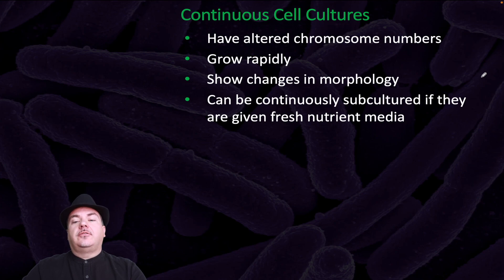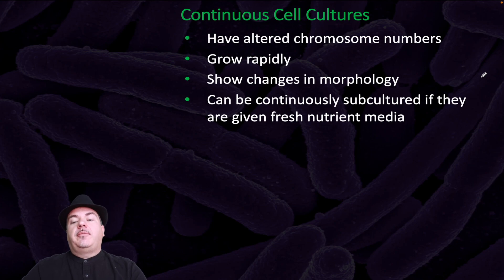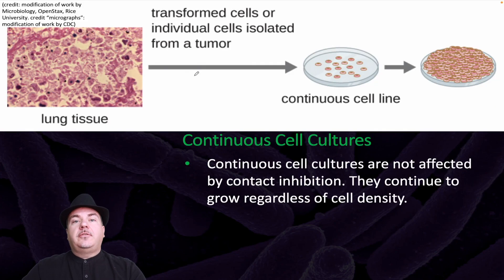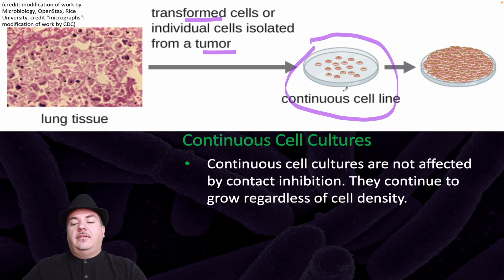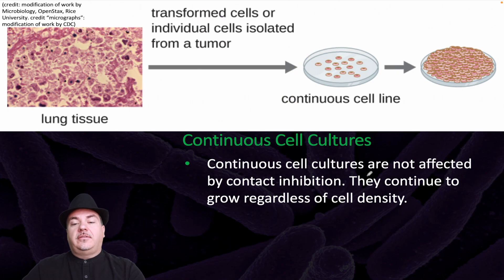Alternatively, we can have continuous cell cultures. Continuous cell cultures can have altered chromosome numbers, they grow rapidly, they show changes in morphology, and they can be continuously subcultured if they are given fresh nutrient media. Originally you take the cells and isolate them from a tissue, but in this case you have transformed cells or individual cells isolated from a tumor, which then creates a continuous cell line. Continuous cell cultures are not affected by contact inhibition — they continue to grow regardless of cell density.